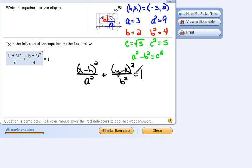Now we have everything we need here. Remember, we know that h is negative 3, we know that k is 2 because that comes from our center, we know a squared is 9, and we know that b squared is 4. We found all of that information a while ago.